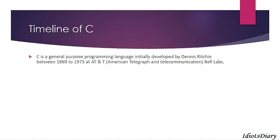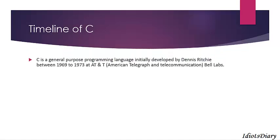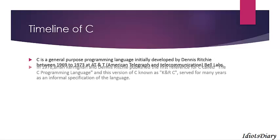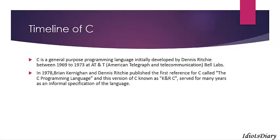C is a general purpose programming language initially developed by Dennis Ritchie between 1969 to 1973 at AT&T Bell Labs. In 1978, Kernighan and Dennis Ritchie published the first reference of C called 'The C Programming Language', and this version of C is known as K&R C.